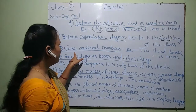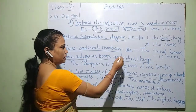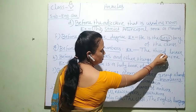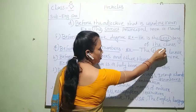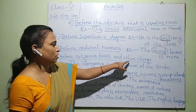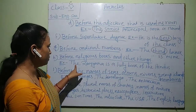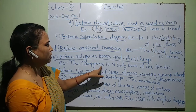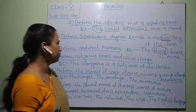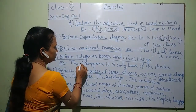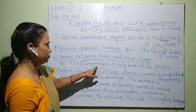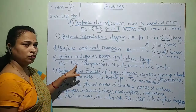We use 'the' before ordinal numbers. For example: 'The third locker is mine.' In this sentence, 'third' is the ordinal number. We also use 'the' before religious books and other things. For example: 'The Ramayana is a holy book of the Hindus.' Ramayana is a religious book, so I use 'the' here.